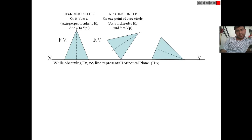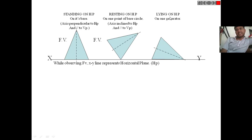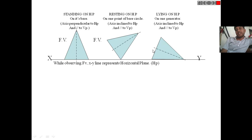If the solid pyramid is resting on one of its slant edges or a triangular face, with its axis inclined to HP and parallel to VP, the front view of the solid is considered in this way.